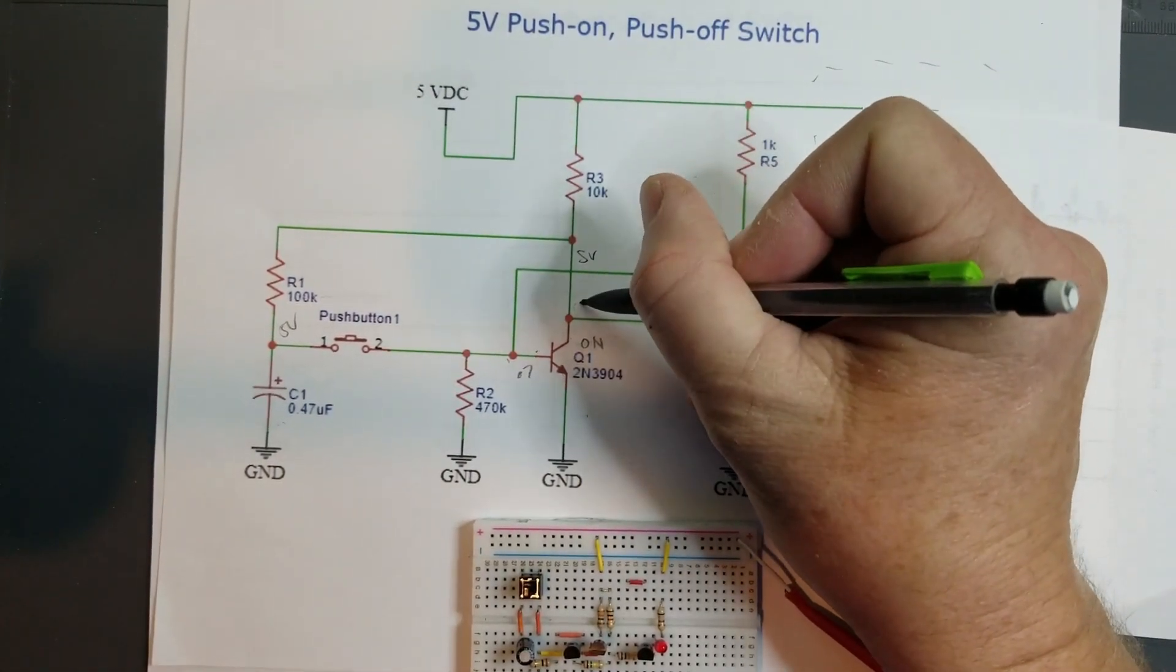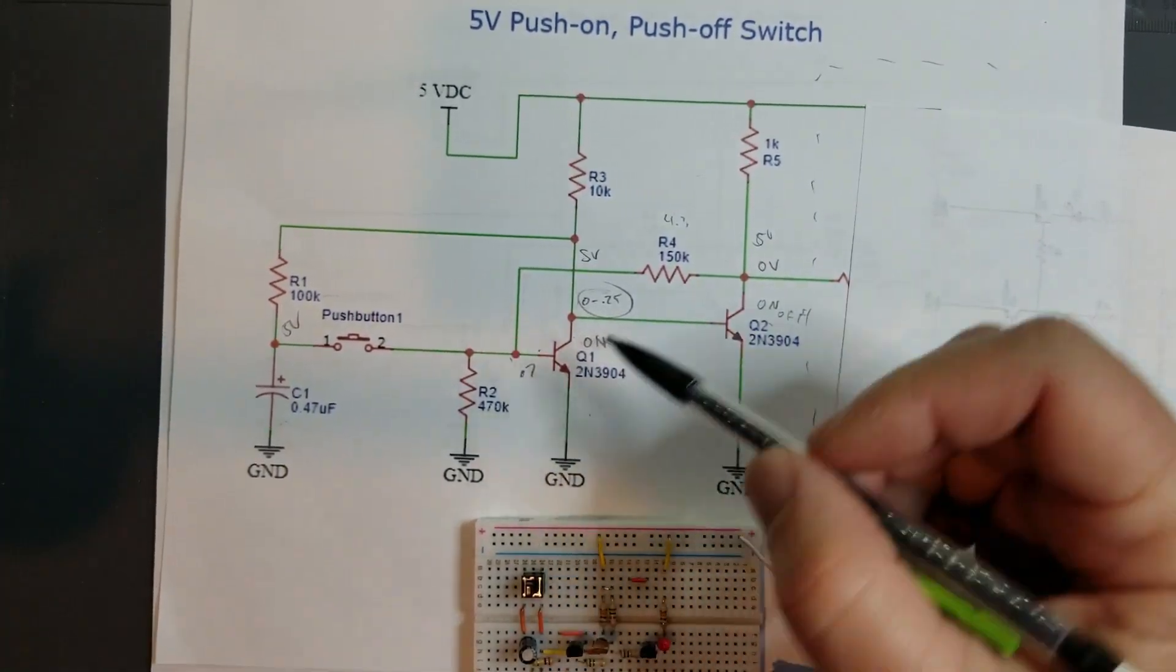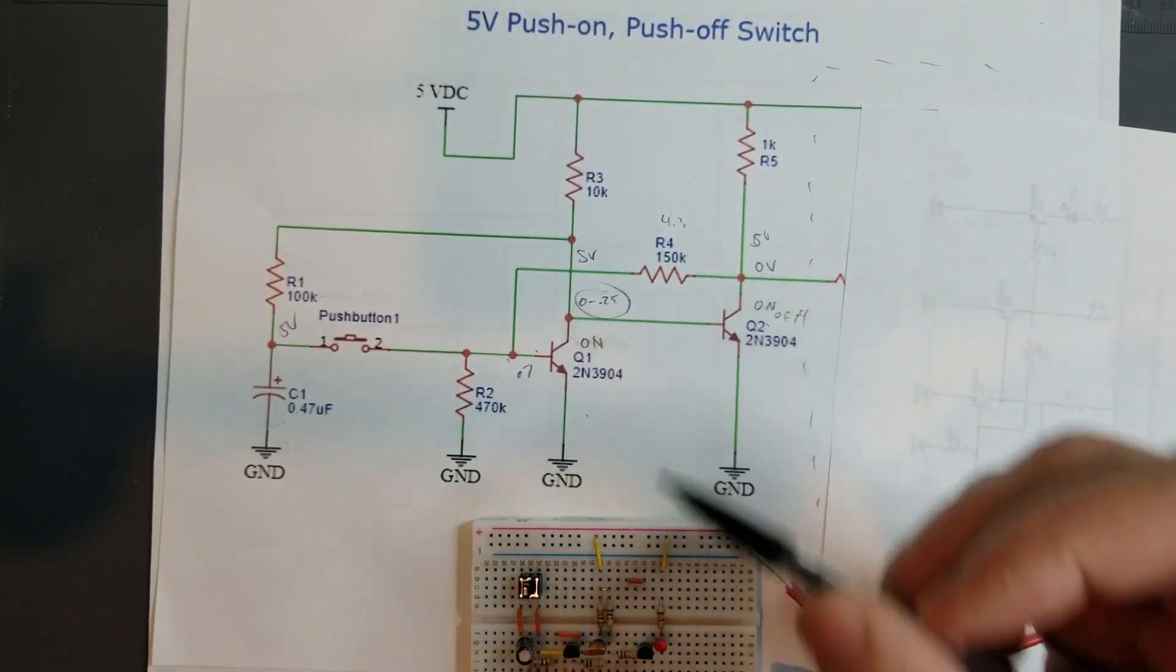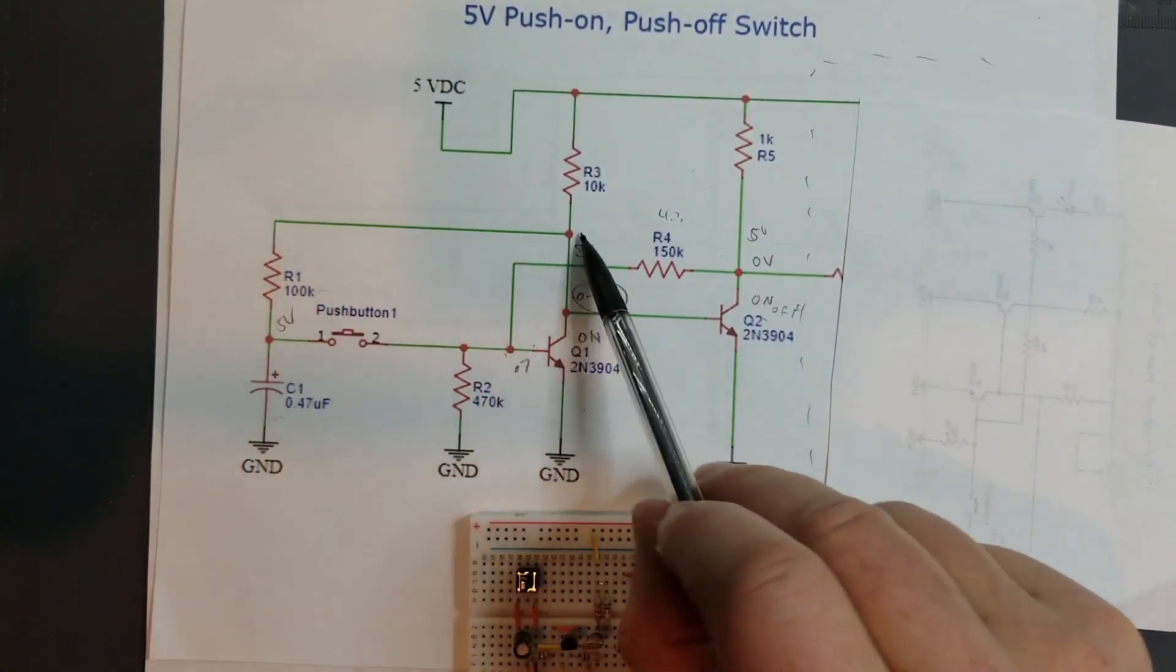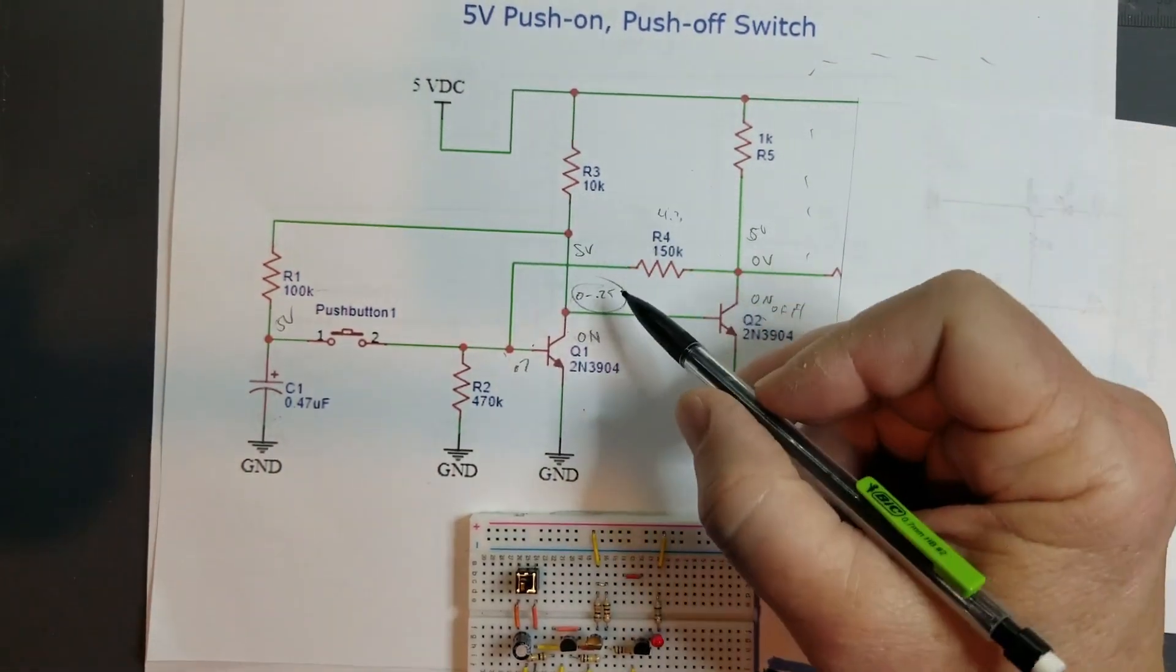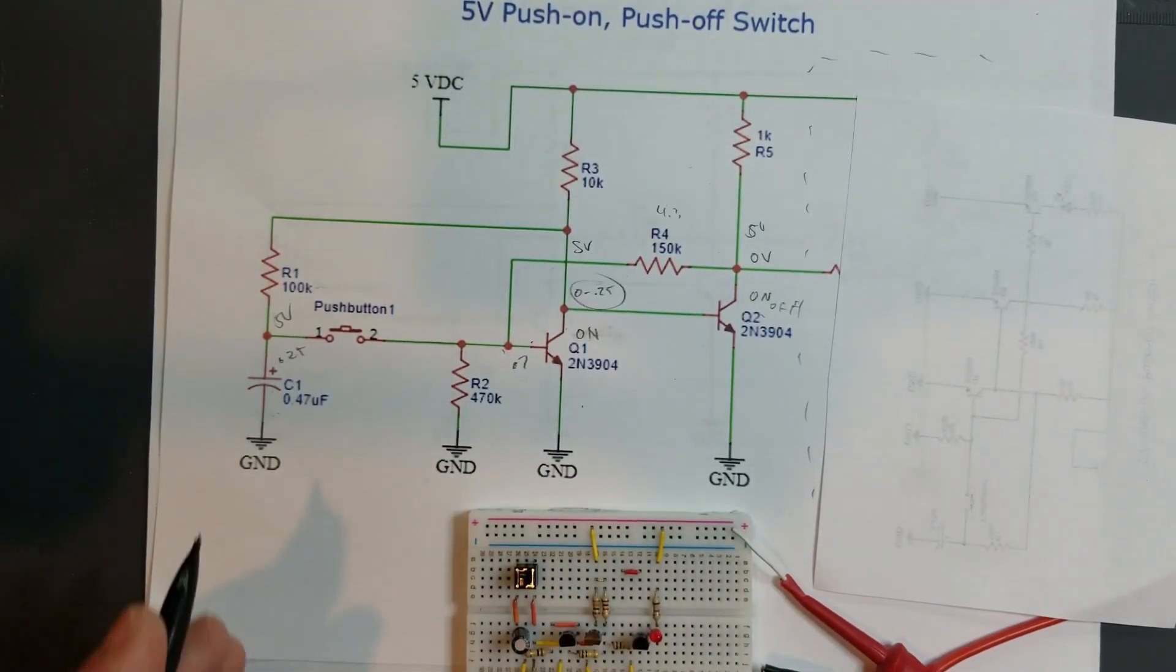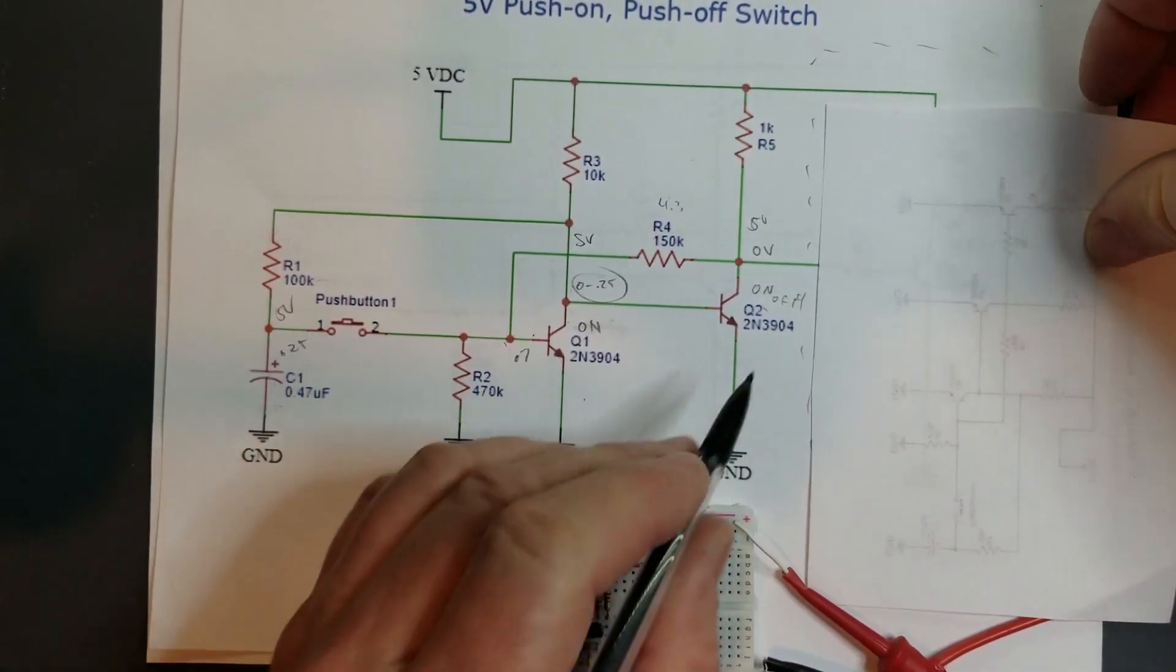All right, so what happens to this capacitor over here? Well, if this transistor is on, then this goes down to about zero to 0.25 volts right here at the collector. We have current flowing through here. We have a voltage drop across R3, about 0.25 volts. So this capacitor is going to discharge the rest of the way through this, and the voltage here is going to be very low, about 0.25 volts on the top of that capacitor.